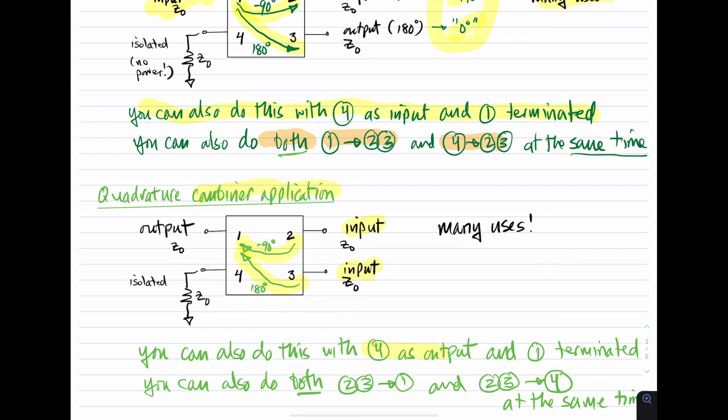And as before, you can also do this with four as the output and one as simply being terminated. Or you can do both of these things at the same time. So you can apply signals to ports two and three, you'll get one version of that at port one and another version of the combined signal at port four, and you can do it all at the same time. As long as all the ports are matched, everything's good.